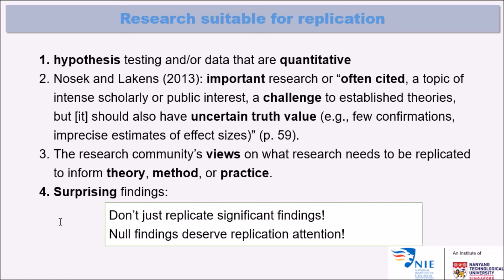The question is: what kind of research might be suitable for replication? There are four guidelines. First, studies that have a quantitative nature and have done hypothesis testing. It will be very difficult to replicate a qualitative study because replication and replicability are most often discussed in terms of effect size — you want to figure out if variable A affects variable B and to what extent, so there has to be some sort of measurement involved.